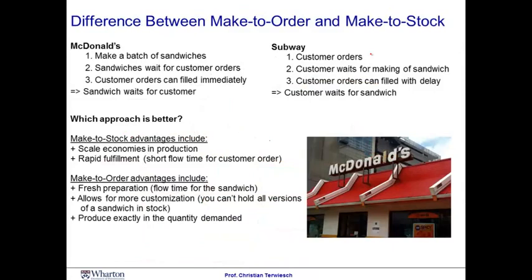Buffer or suffer — there is no single right answer. You can see this by comparing the two biggest restaurant chains: Subway and McDonald's. At Subway, customers wait for their sandwiches to be made to order — the customer stands in line until their specific sandwich is completed. McDonald's follows a different strategy: the restaurant makes a whole batch of sandwiches — not just one cheeseburger but 20 in a row — and the sandwiches wait for the customer orders. When the order comes in, it can be fulfilled immediately.